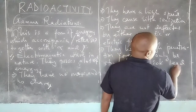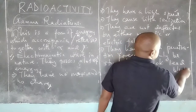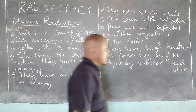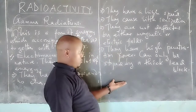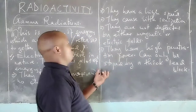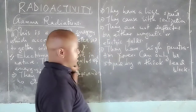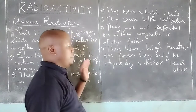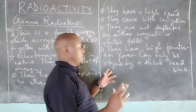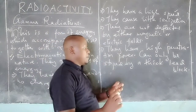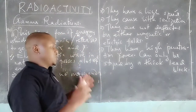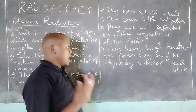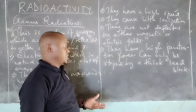A thick lead block can block or stop a stream of gamma radiations. But they can penetrate a sheet of paper and they can penetrate aluminum sheets.